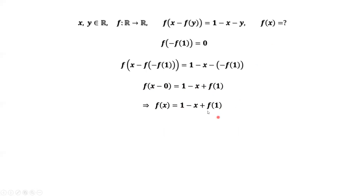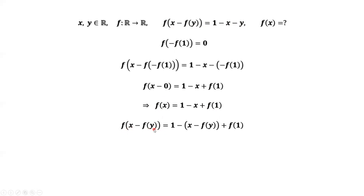Now the question is, what is the value of f of 1? We want to find f of 1. This is the second important result. We want to find the second version of the given equation. The first version is f of x minus f of y equals 1 minus x minus y. Now we want to derive the second version for f of x minus f of y. Using this result, we replace x by x minus f of y in this equation. We simplify the right-hand side: we have 1 minus x plus f of 1 plus f of y.